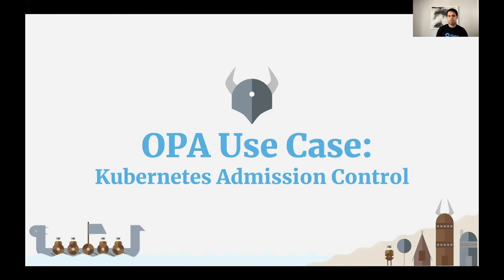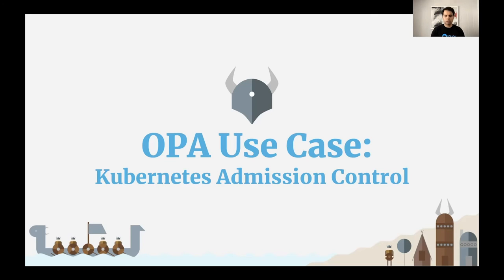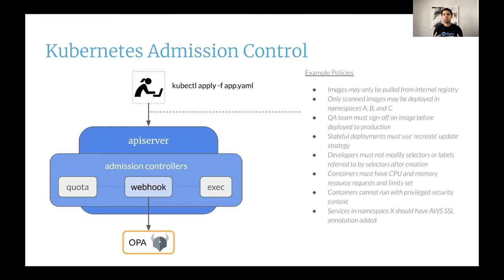Let's look at the Kubernetes admission control use case. Admission control is a piece of code that intercepts requests to your Kubernetes API server before they are persisted into etcd, and it's an excellent way to enhance the security profile of your cluster. With OPA as an admission controller, you can enforce policies such as preventing images from being pulled from external registries, requiring containers to specify CPU and memory limits, or preventing containers from running in privileged mode. In fact, all pod security policies can be implemented using the Open Policy Agent.